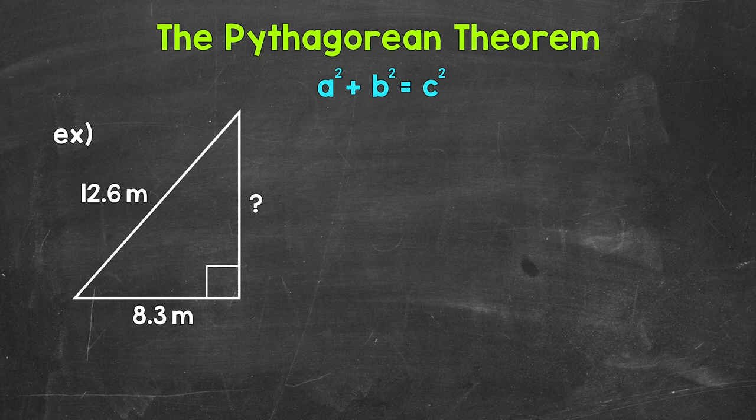Now remember, we use the equation a squared plus b squared equals c squared, with a and b always being the legs. It doesn't matter which leg is a and which leg is b, and then c is always the hypotenuse. If we know the lengths of two sides of a right triangle, we can use the Pythagorean theorem to find the length of the third side.